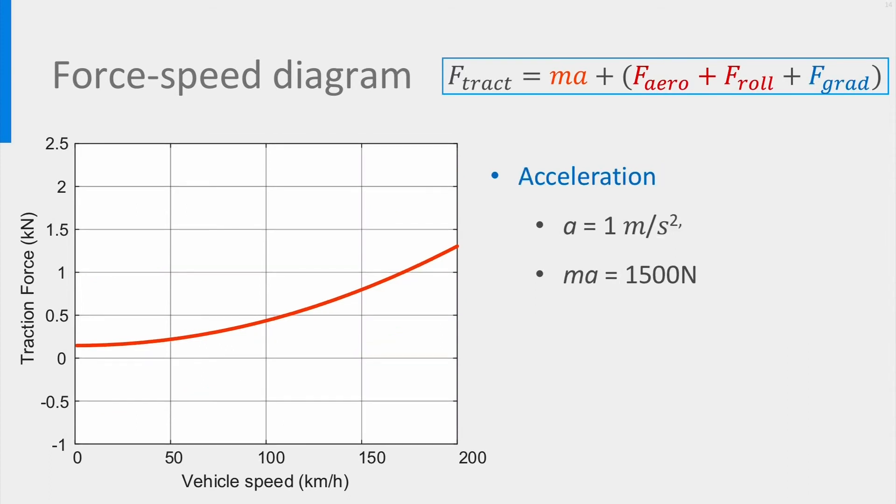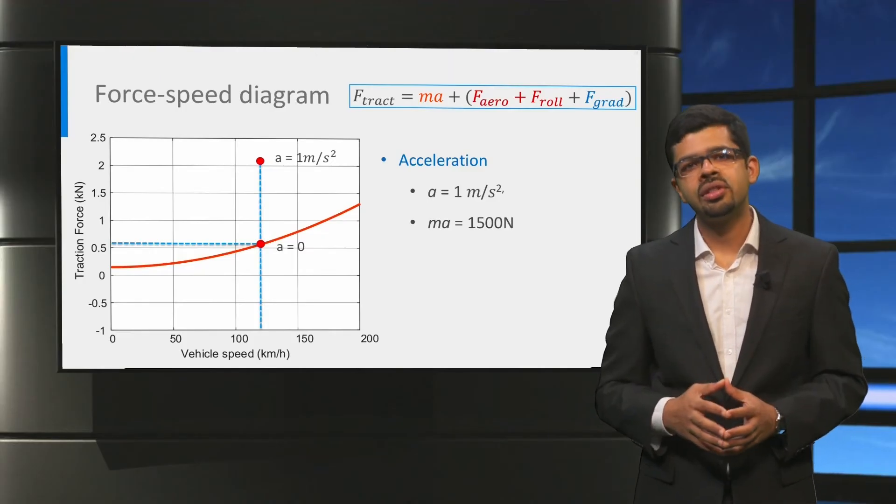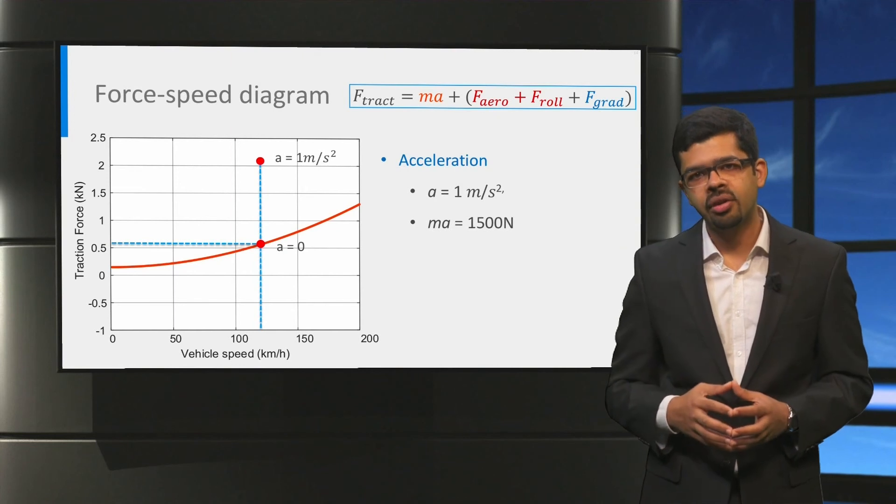Finally, let us consider the case when the vehicle has a finite acceleration. This is the force-speed curve for the same car with 0% gradient and 0 acceleration. Since the mass of the car is 1,500 kg or 1.5 tons, for every 1 m per second squared acceleration, an extra 1,500 newtons of traction force is required from the powertrain.